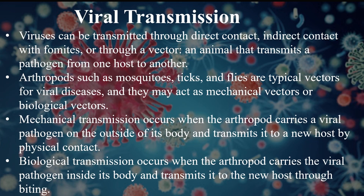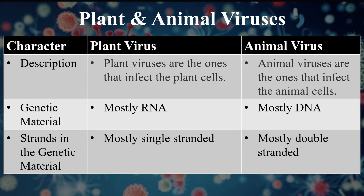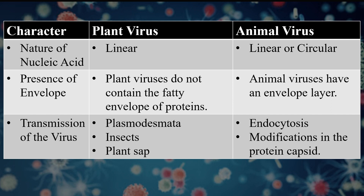Looking at differences between plant and animal viruses: plant viruses have genetic material that is mostly RNA, while animal viruses have mostly DNA. The genetic material in plant viruses is mostly single-stranded, while in animal viruses it is double-stranded. The nucleic acid in plant viruses is linear, while in animal viruses it may be linear or circular. Plant viruses do not contain a fatty envelope — their outer layer is the capsid — while animal viruses have an envelope present.